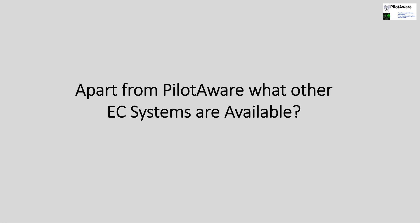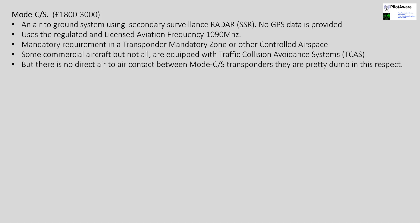So what other electronic conspicuity devices are available apart from PilotAware? There are of course the air-to-ground transponders that we use to let air traffic control know our position when we're in controlled airspace and also as a general target when we're outside. These are known as Mode C or Mode S transponders and they work on the legacy 1090 megahertz aviation frequency which has been used for over 70 years. This system has served us well but the modulation technique used has its limitations and it can suffer from frequency overload if the density of aircraft gets too large in a specific area. It also needs very expensive secondary surveillance radar to work. Mode C and Mode S transponders don't communicate with each other in the air so they can't be considered as a two-way electronic conspicuity device.